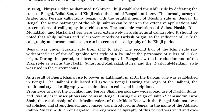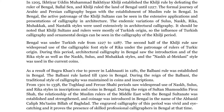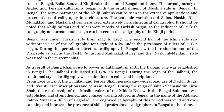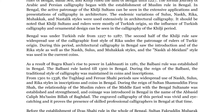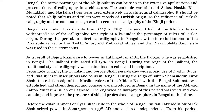Bengal was under Turkish rule from 1227 to 1287. The second half of the Khilji rule saw widespread use of the calligraphic font style of Rika under the patronage of rulers of Turkic origin. During this period, architectural calligraphy in Bengal saw the introduction of the Rika style as well as the Nasq, Sulus, and Mahakak styles, and the Nasq al-Maidani style was used in the current coins.